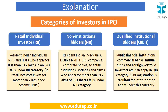To answer this question we must be aware about the different categories of investors in an IPO. There are broadly three categories: the first is retail individual investors — persons like you and me. Next is non-institutional bidders — big persons, big corporates, trusts, societies with more money. The third is qualified institutional bidders, or QIBs — very large institutions with a lot of money.